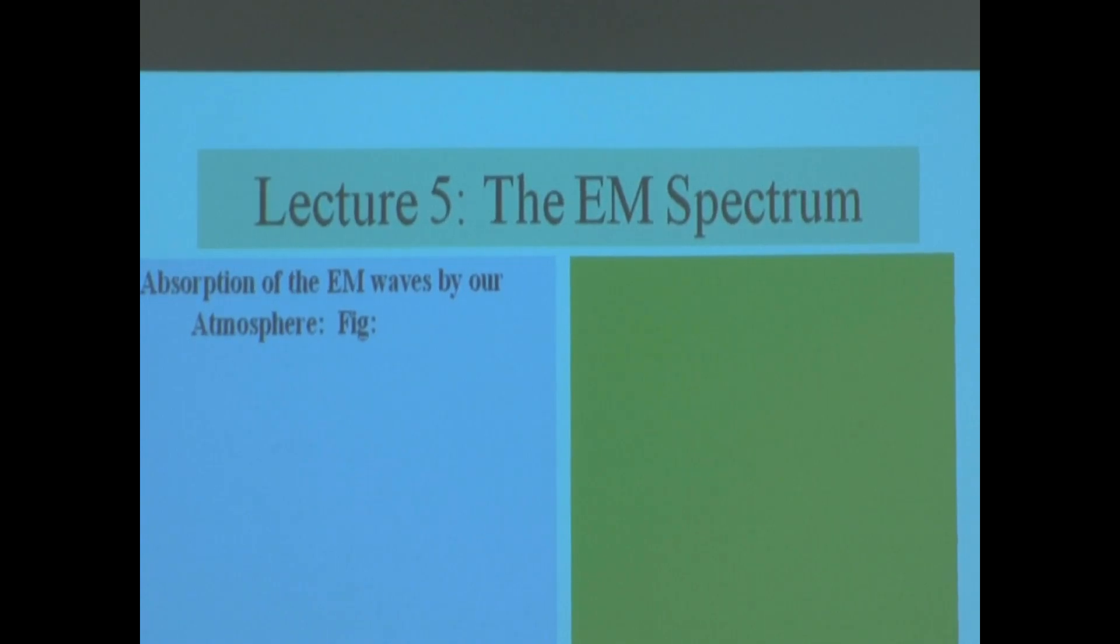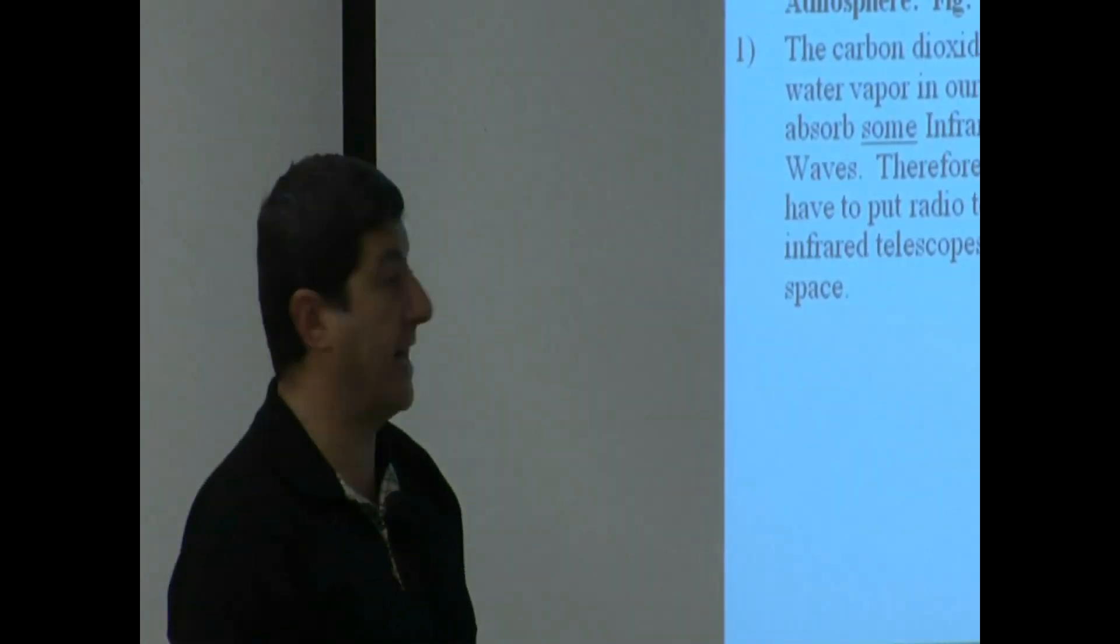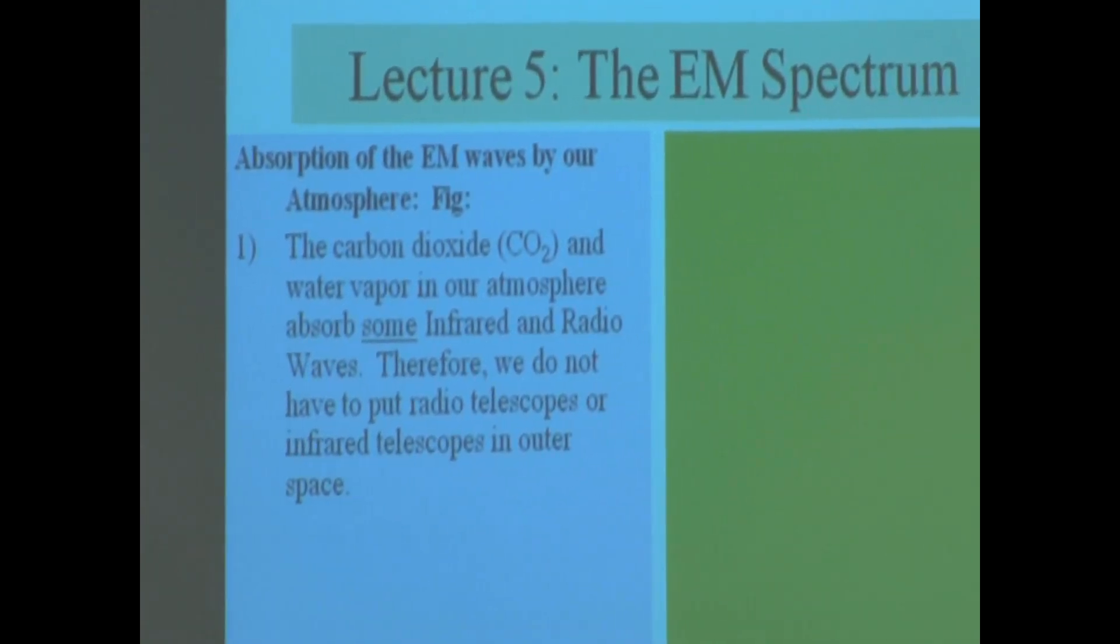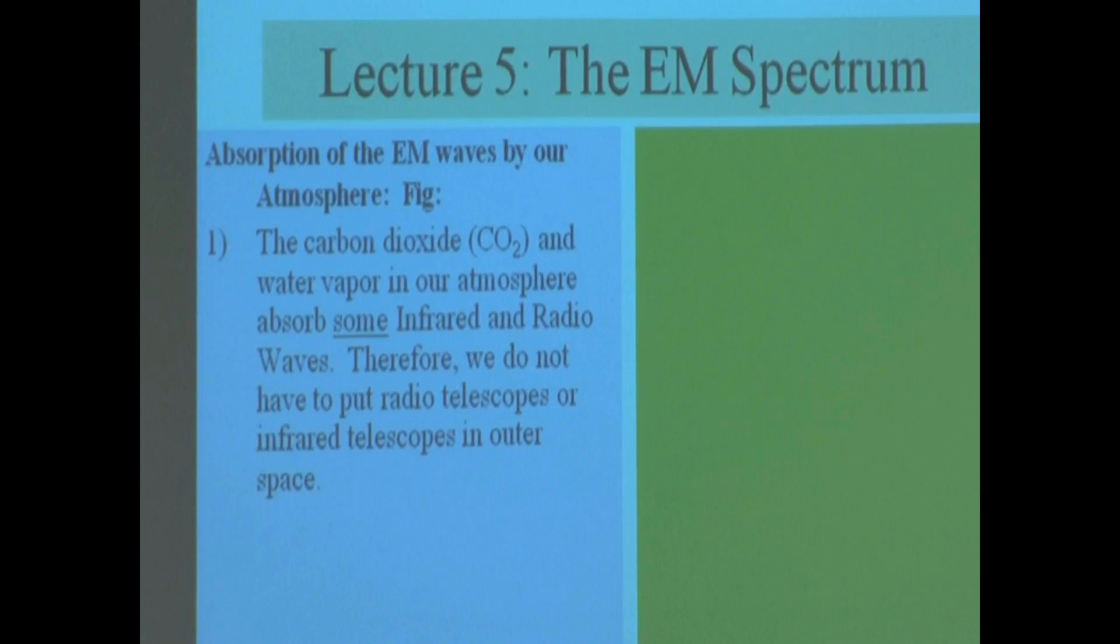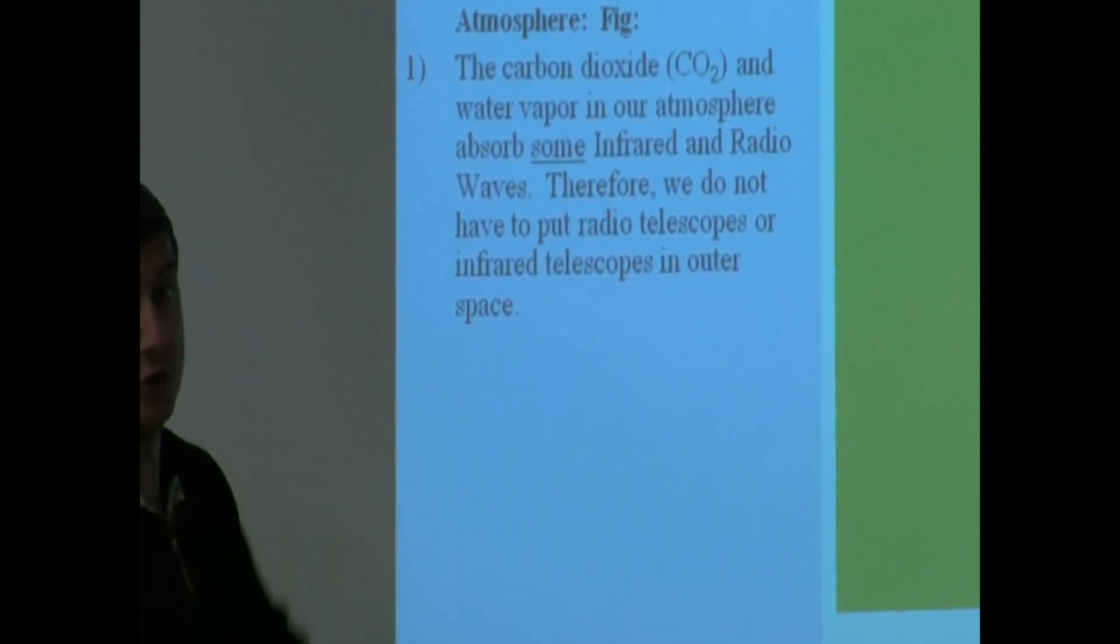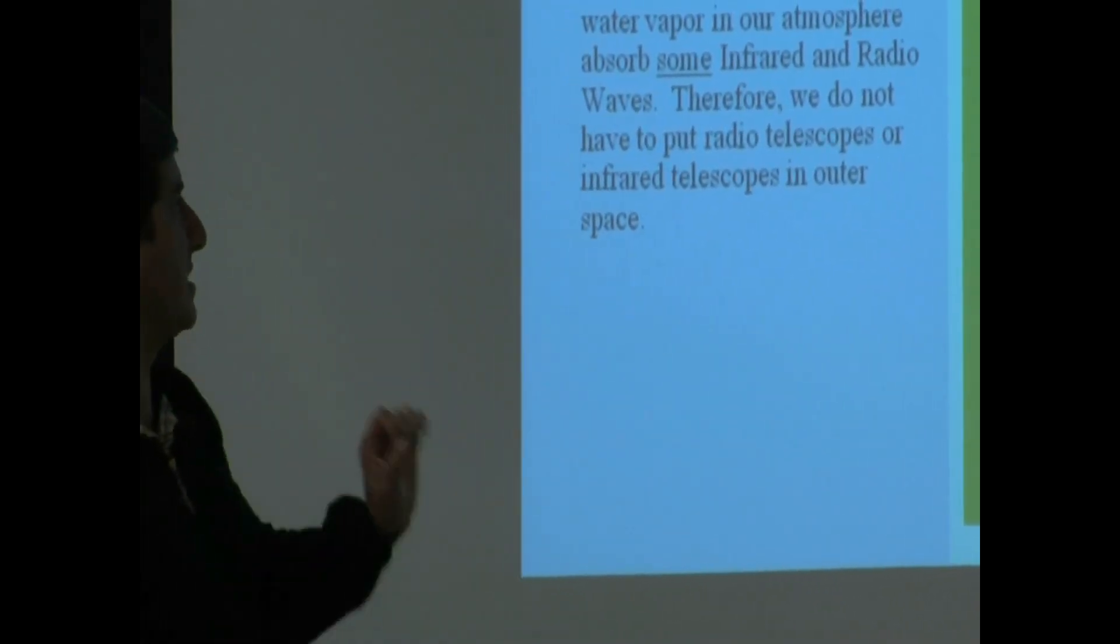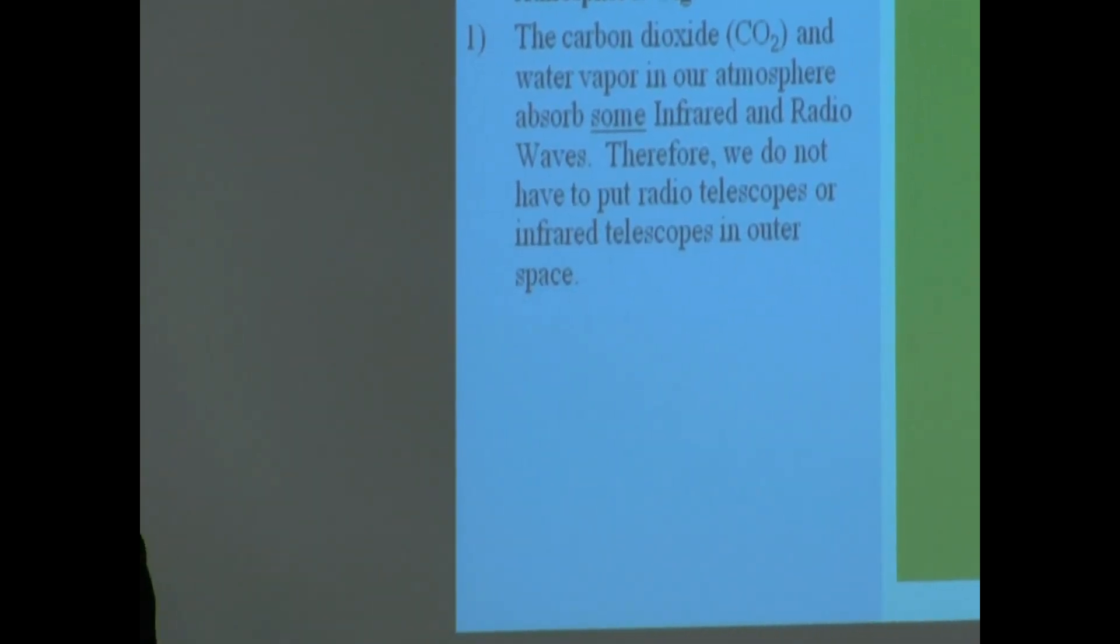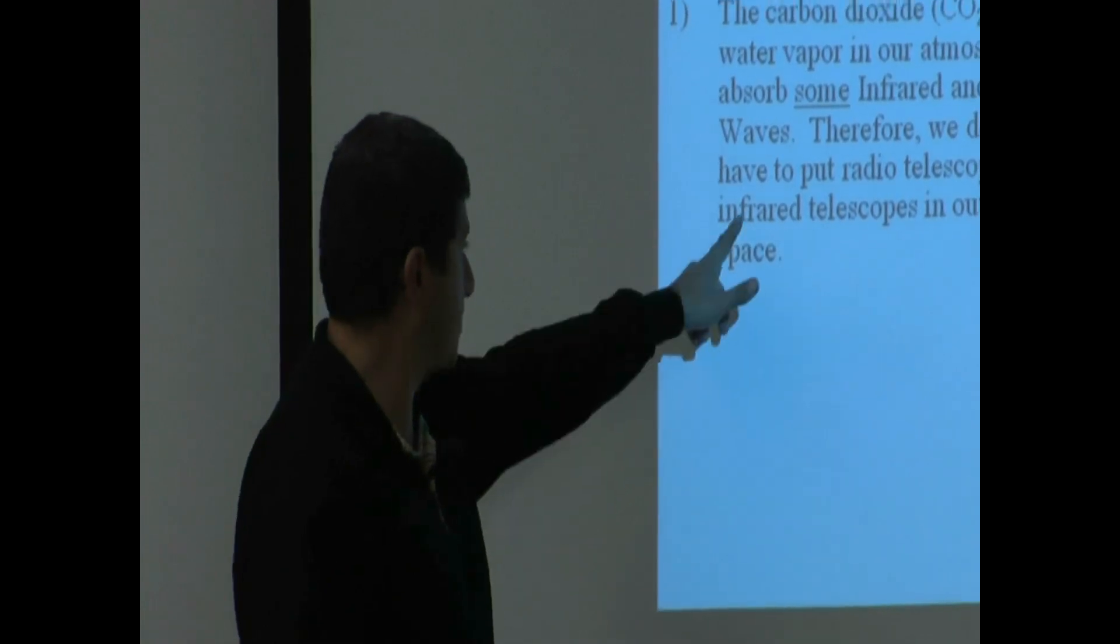So the next topic is how these electromagnetic waves are absorbed in our atmosphere. Our atmosphere helps to protect us from some of these dangerous electromagnetic waves. So it says here the carbon dioxide, the CO2, and also the water vapor in our atmosphere, which basically means the H2O water, which eventually goes up to the atmosphere and makes clouds and stuff like that, the water vapor. They absorb some of the infrared and radio waves. That means they do not make it all the way down to the surface of the Earth. Therefore, we do not have to put radio telescopes or infrared telescopes in outer space. Since they only absorb some of them, that means if we design the radio telescope, for the most part, we do not have to put that telescope in outer space. Same thing with infrared.